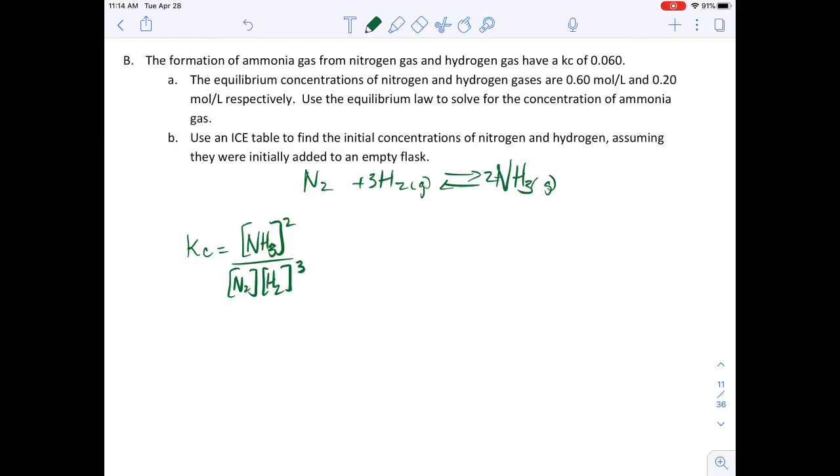Then it says use an ICE table to find the initial concentrations of nitrogen and hydrogen, assuming they were initially added to an empty flask. So this question is a little bit different. You can see when we're starting they give us an equilibrium value and then they give us some equilibrium conditions for some different chemicals and ask about the other chemical.